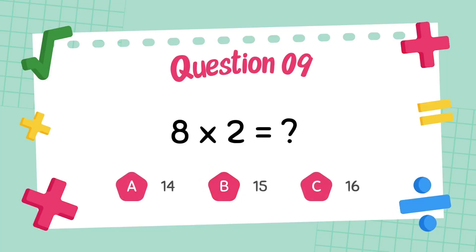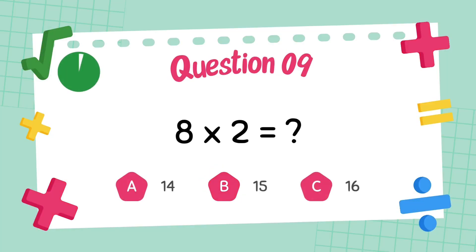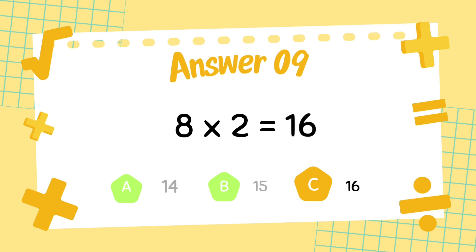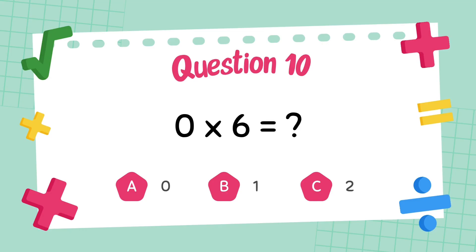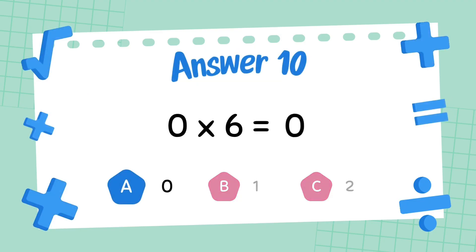What is 8 multiply 2? The answer is 2. What is 0 multiply 6? The answer is 0.